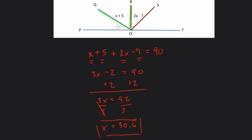We can plug that in to get our values of our angles. X plus 5, well, that's 30.6 repeating plus 5, or 35.6 repeating.